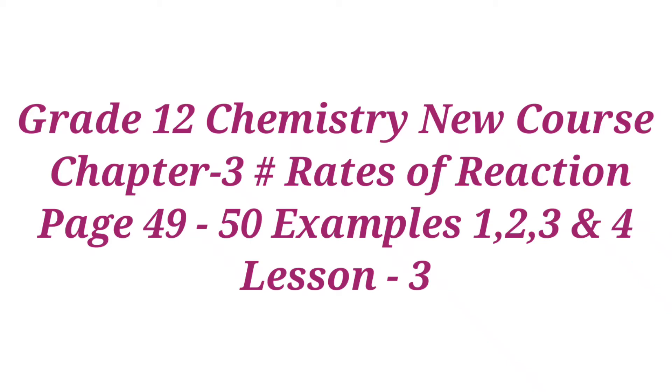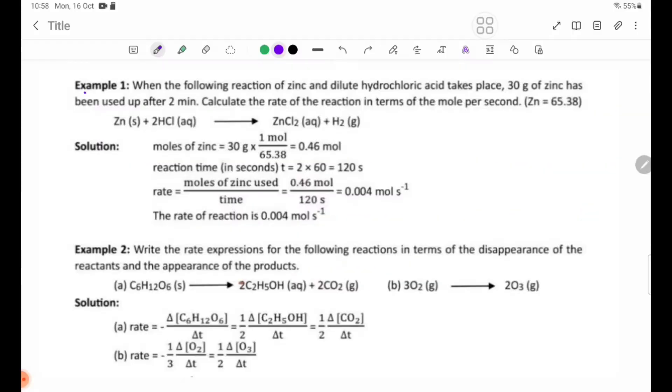What's the result of the reaction of zinc and dilute hydrochloric acid? Chapter 3, Rates of Reaction, page 49 to 50, March 8, numbers 1, 2, 3, 4. Example 1: